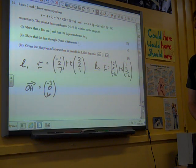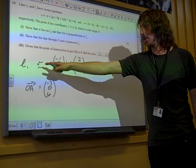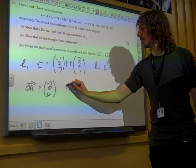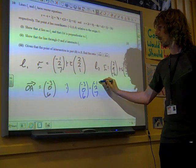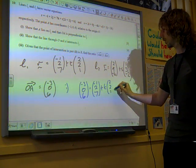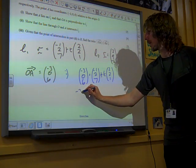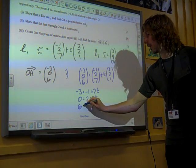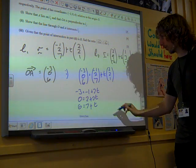Show that A lies on L1 and that OA is perpendicular to L1. Well, first to show that A lies on L1, we just need to show that its position vector fits that equation. So for part 1, we need to find the value of T that satisfies all three equations. We've got minus 3 is minus 1 plus 2T, 0 is 2 plus 2T, and 6 is 7 plus T.